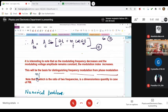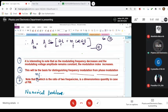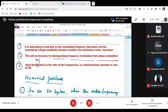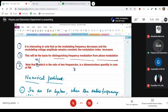This is point number 1, this is 2. mf as you can see is a ratio of 2 frequencies, delta f by fm. Since it is a ratio of 2 frequencies, it is a dimensionless quantity in case of FM.